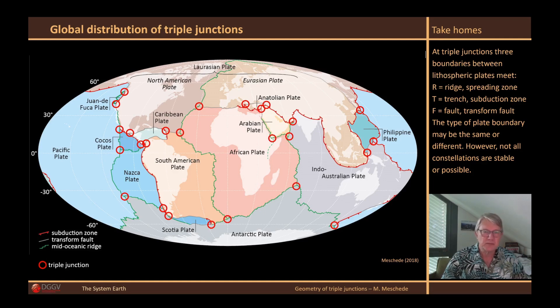As already shown, at divergent plate boundaries, the plates move away from each other. At convergent plate boundaries, they move towards each other. And at transform faults, they slide past each other. And these different movement patterns can meet at one point.